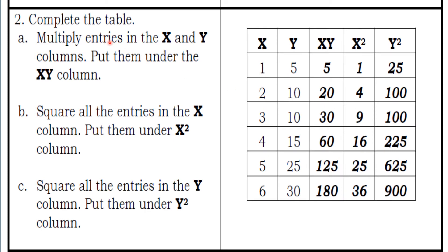Second task is to multiply entries in the x, y columns, put them under xy column. So, 1 times 5 is 5, 2 times 10 is 20, 3 times 10 is 30, 4 and 15 is 60, 5 times 25 is 125, 6 times 30 is 180.